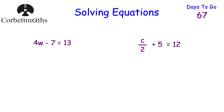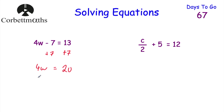Our next question is 4W take away 7 equals 13. Feel free to press pause and try this. We want to get rid of the take away 7 first, so we add 7 to both sides. On the left-hand side we're left with 4W, and on the right-hand side 13 plus 7 is 20. So we've got 4W equals 20. Now divide by 4 on both sides: 4W divided by 4 is W, and 20 divided by 4 is 5. So W equals 5. Check: 4 times 5 is 20, take away 7 is 13. Perfect.